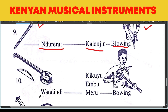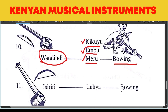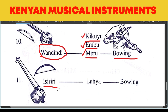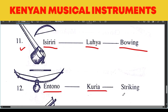Under the string instruments, we have Wandindi. Wandindi is a string musical instrument that has one or two strings. It's played by the Kikuyu people, the Embo, Meru, and some tribes that belong to the Kikuyu. They play Wandindi by bowing — not blowing, it is bowing. We have Isiriri from the Luyia, played by bowing. It's also a string musical instrument with one string, and the resonator is open on one side. We have Entorno from the Kuriya. The medium of playing this instrument is you strike it. Here is the resonator — the calabash. Look at the position of the resonator.